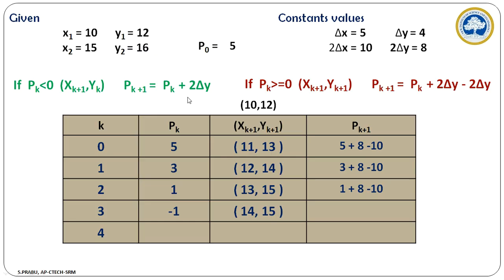Now the value is negative, so we choose the other formula — in this formula, we increment only the x coordinate value, giving the next value (14, 15). The next decision parameter is calculated as minus 1 plus 2*delta_y. Since 2*delta_y is 8, we get minus 1 plus 8 equals 7. This value is positive, so we get (15, 16), which is the end point. So we stop the calculation here and have found all intermediate pixels between the starting and end points.